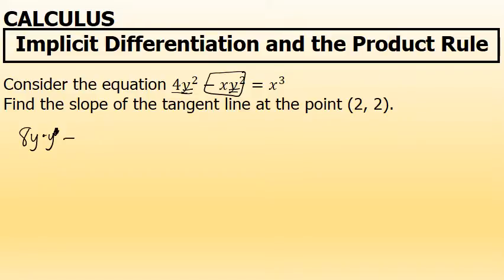The second term in this equation is negative x times y squared — that is a product. I'm going to consider the first factor as negative x and the second factor as y squared, and then use the product rule. The product rule states that the derivative of two factors is the first factor unchanged times the derivative of the second factor. The derivative of y squared is 2y, but since we are differentiating with respect to x, we have to include a factor of y prime.